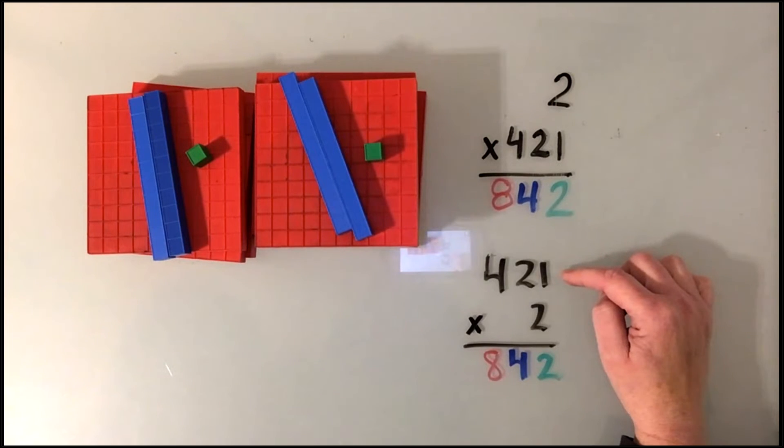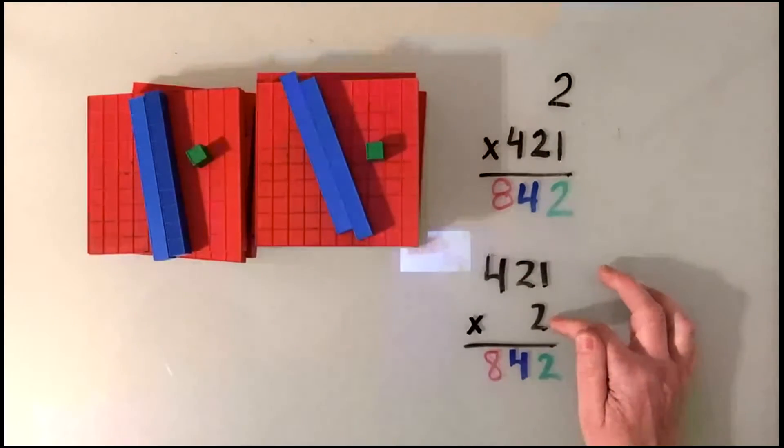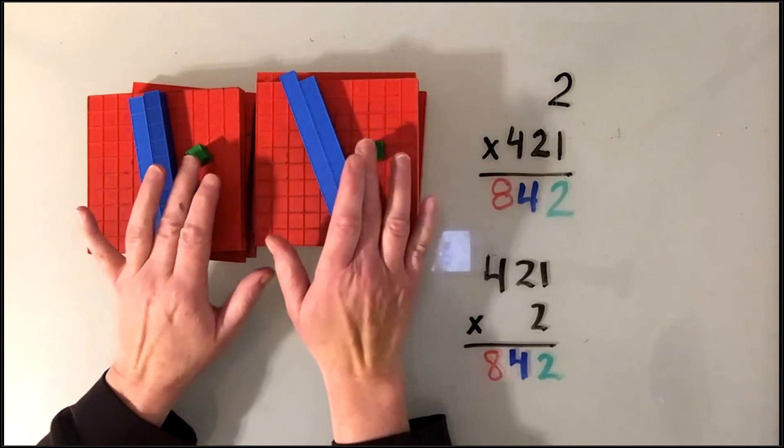Here we are counting 421 two times, and you can see I've made piles of 421 two times. It still comes out to eight hundreds, four tens, and two units.